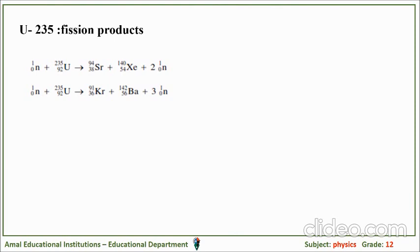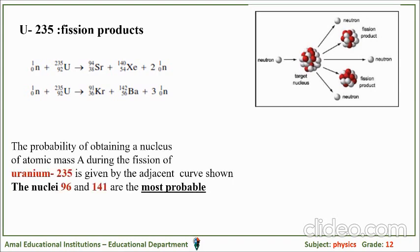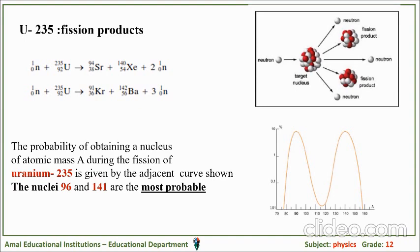What are the fission products of uranium-235? When bombarded with a neutron, uranium-235 gives either strontium, xenon, krypton, or barium as daughter nuclei, along with emitted neutrons. The daughter nuclei may be at rest or in an excited state that releases energy. The probability of obtaining a nucleus of atomic mass A during the fission of uranium-235 is given by a curve where nuclei of mass 96 and 141 are the most probable, corresponding to barium, krypton, strontium, and xenon.